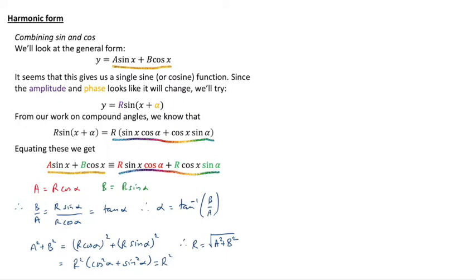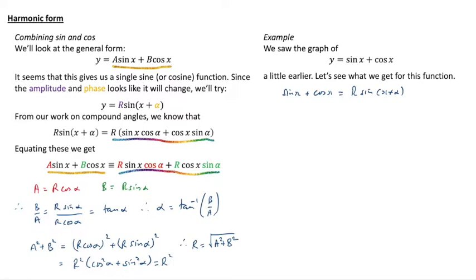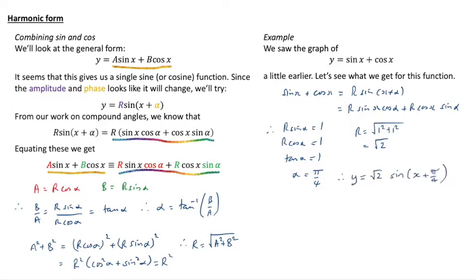So if we're given an expression which is y equals something times sine plus something times cos, we can turn it into a sine function. Let's have a look at how this works and we may as well use sine x plus cos x which we looked at at the beginning of this video. What do we get for that function? Well sine x plus cos x is r sine x plus alpha and we expand that out r sine x cos alpha plus r cos x sine alpha. That means that because the coefficients of sine x and cos x on the left hand side are both 1, so that's our capital A and capital B from before, they're both equal to 1, then we have r sine alpha is 1 and r cos alpha is 1. That means tan alpha is 1 and alpha is pi over 4. We also have that r is the square root of 1 squared plus 1 squared, which is the square root of 2.